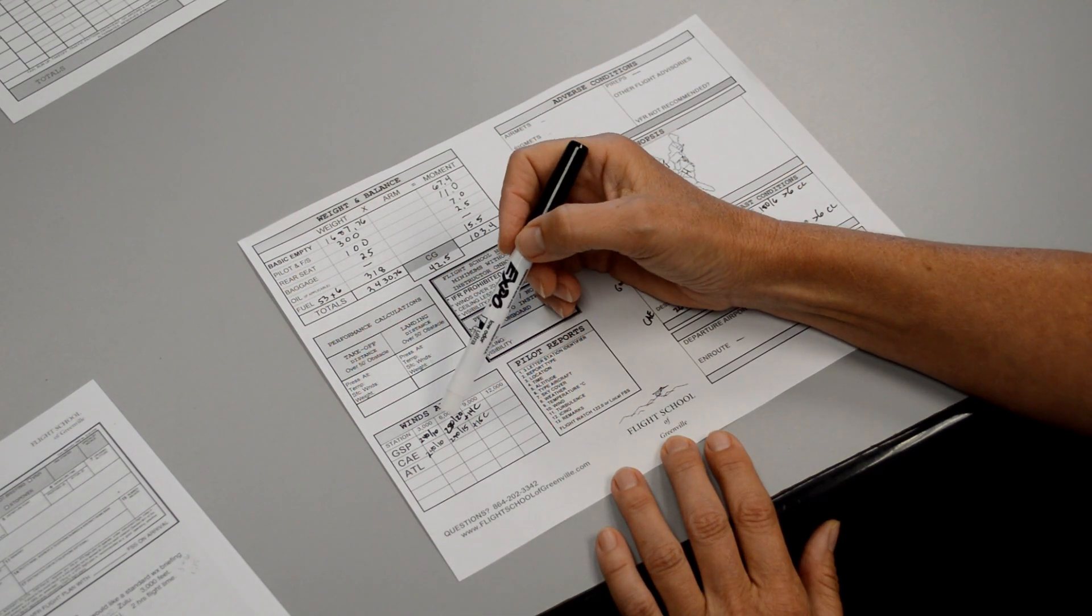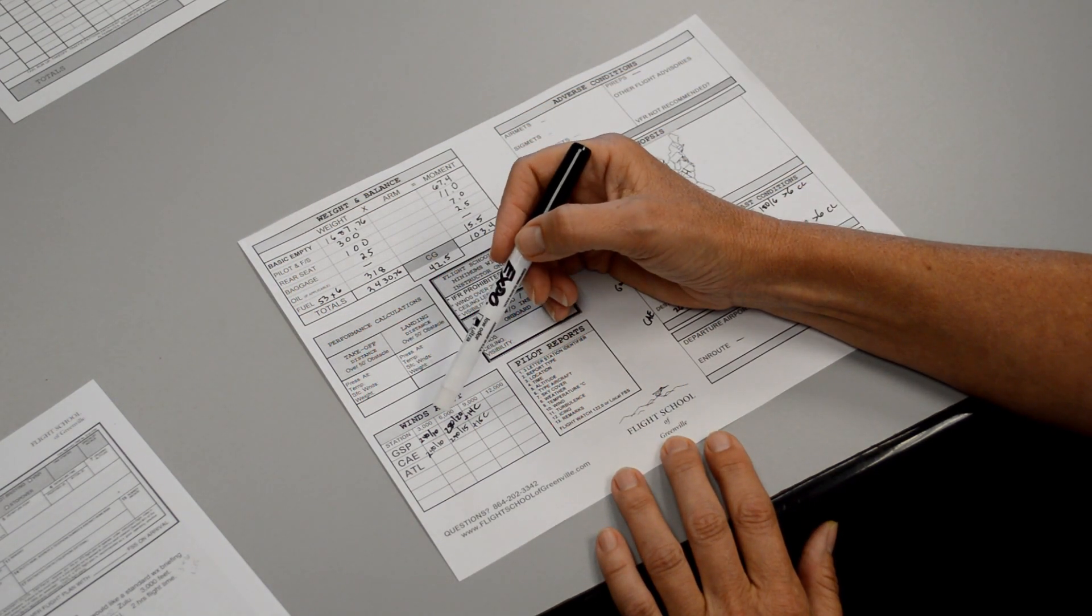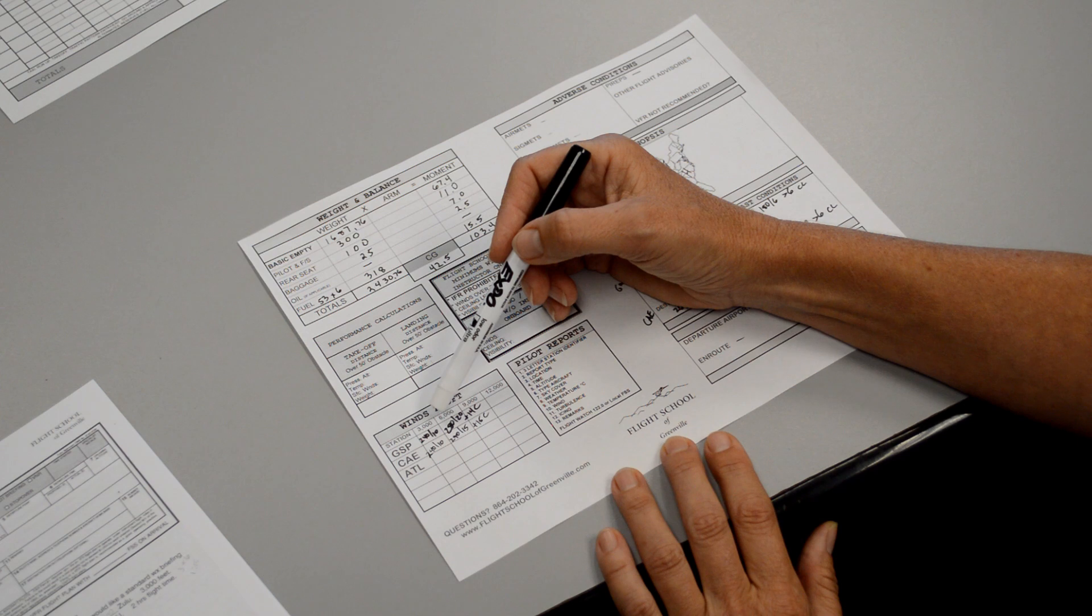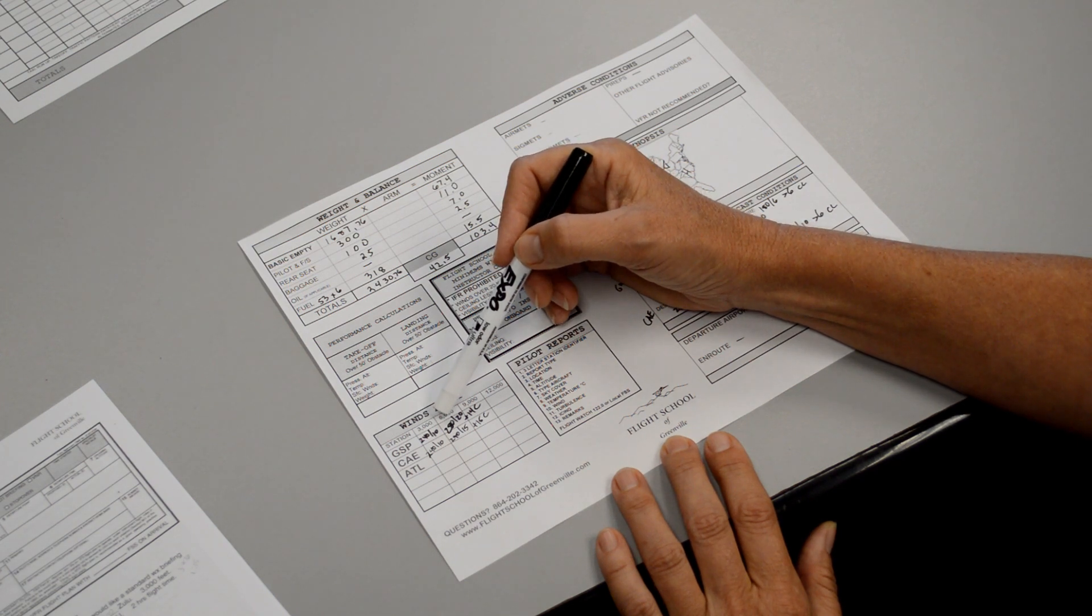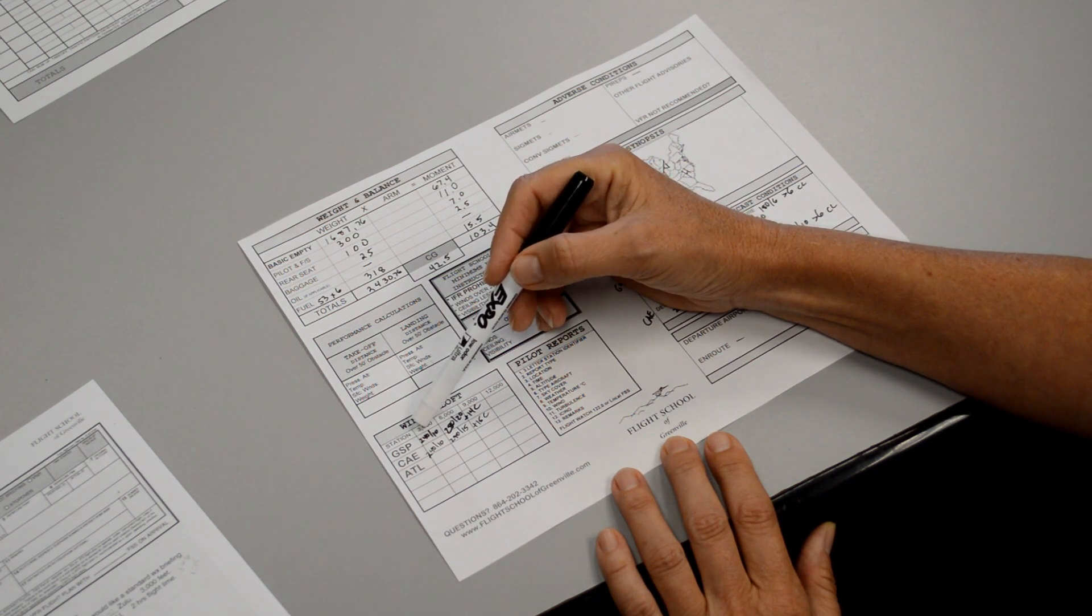So, just glancing at the winds, it looks like we would be better off if we climbed up to around 5,500 instead of staying lower at 3,500.